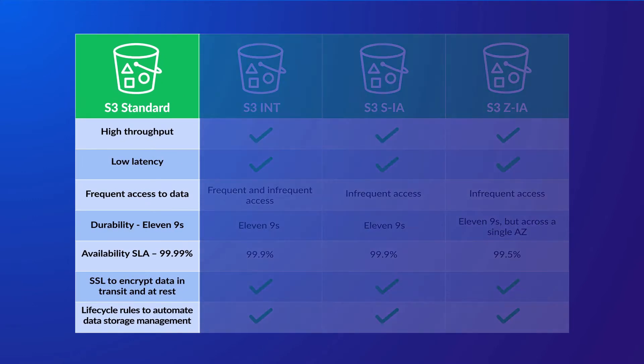S3 Standard. This storage class is considered a general purpose storage class. It is ideal for a range of use cases where you need high throughput with low latency, with the added ability of being able to access your data frequently. By copying data to multiple availability zones, S3 Standard offers 11 nines of durability across multiple availability zones, meaning that your data remains protected against a single availability zone failure. It also offers a 99.99% availability SLA across the year, which is the highest availability SLA that S3 offers.